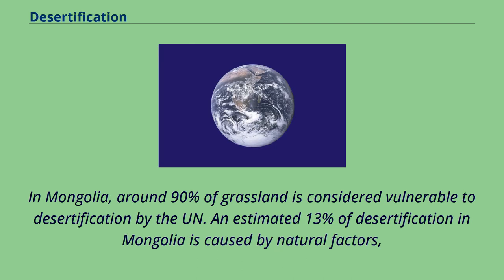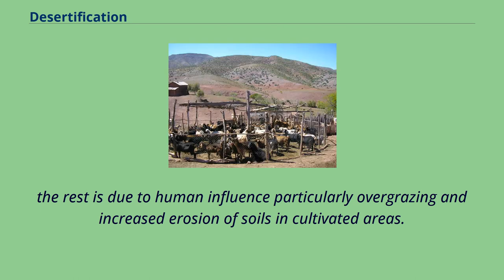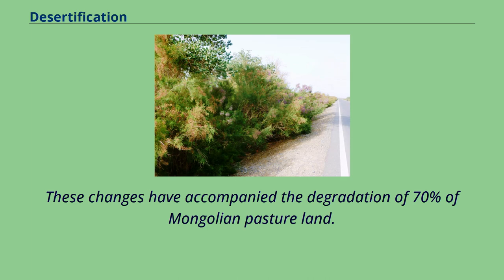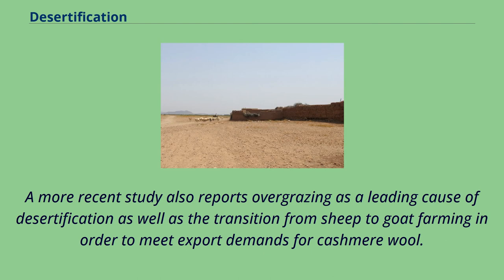In Mongolia, around 90% of grassland is considered vulnerable to desertification by the UN. An estimated 13% of desertification in Mongolia is caused by natural factors. The rest is due to human influence, particularly overgrazing and increased erosion of soils in cultivated areas. The area of Mongolian land covered by sand has increased by 8.7% over the last 40 years, accompanying the degradation of 70% of Mongolian pasture land. The Mongolian government also listed forest fires, blights, unsustainable forestry and mining activities as leading causes. A more recent study also reports overgrazing as a leading cause, as well as the transition from sheep to goat farming to meet export demands for cashmere wool, since goats do more damage to grazing lands by eating roots and flowers.